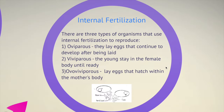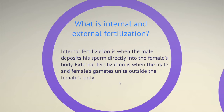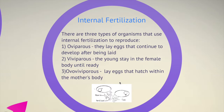Let's talk a little bit more about internal and external fertilization. Here we have another slide about internal fertilization. There are three types of organisms that use internal fertilization. Number one is oviparous, number two is viviparous, and number three is ovoviviparous. Oviparous organisms lay eggs that continue to develop — examples include chickens and ducks. Their fertilization is inside the body; the male releases sperm inside the female's body, where the eggs develop.